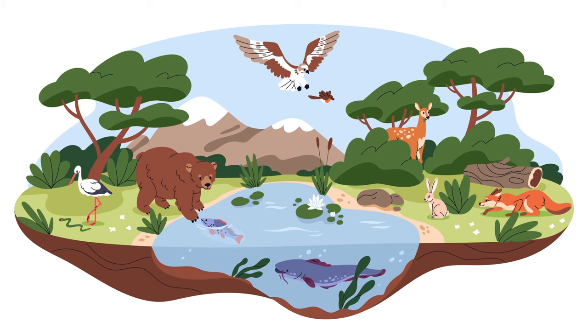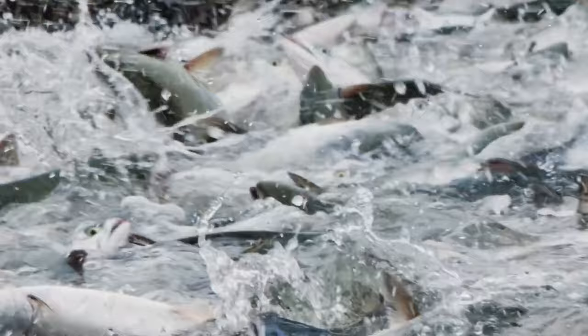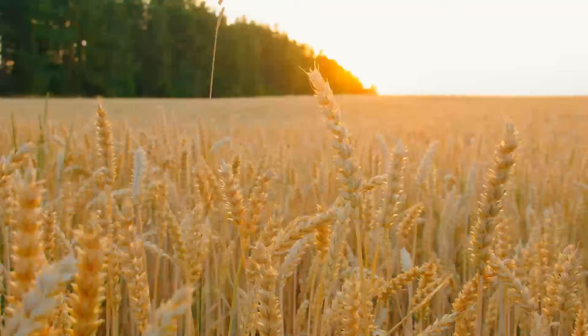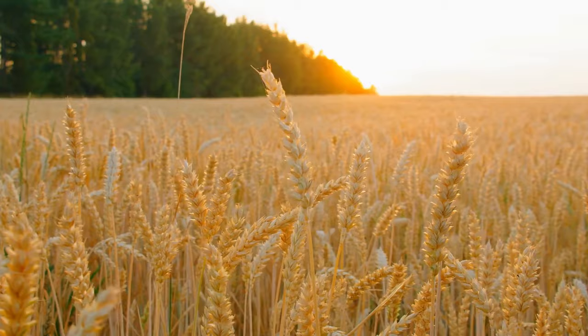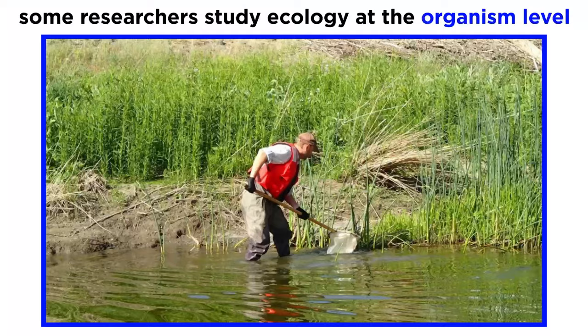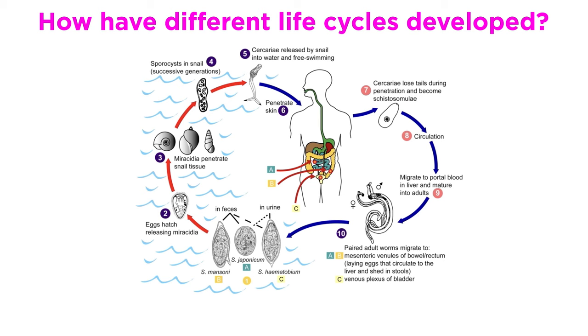Life histories vary tremendously from one species to the next. For example, some organisms die immediately after reproducing, such as salmon, many insects, and all grain crops, while others live on to reproduce repeatedly, like most plants and vertebrates. Why is there so much variation? Researchers who study ecology at the organism level ask this question and many others, like how have different life cycles developed?